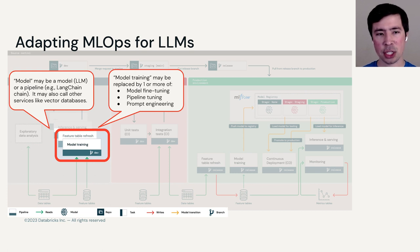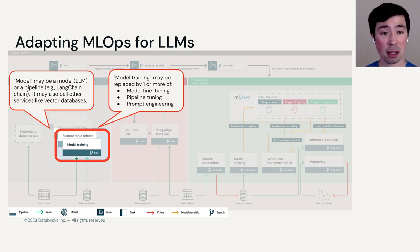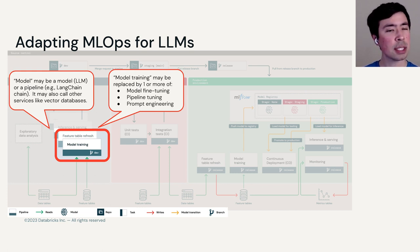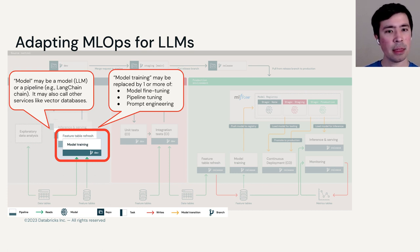First, model training might change. In traditional ML, you often retrain a model pretty frequently. As we've discussed previously in the course, model training outright — completely de novo training for an LLM — is often infeasible. So this might be replaced with something lighter weight like model fine-tuning, which still produces a new model, or maybe pipeline tuning or prompt engineering, and these don't produce new models. But note that no matter what we do, all of these pipelines or fine-tuned models are either models or pieces of code, and our existing ML Ops infrastructure knows how to handle those.